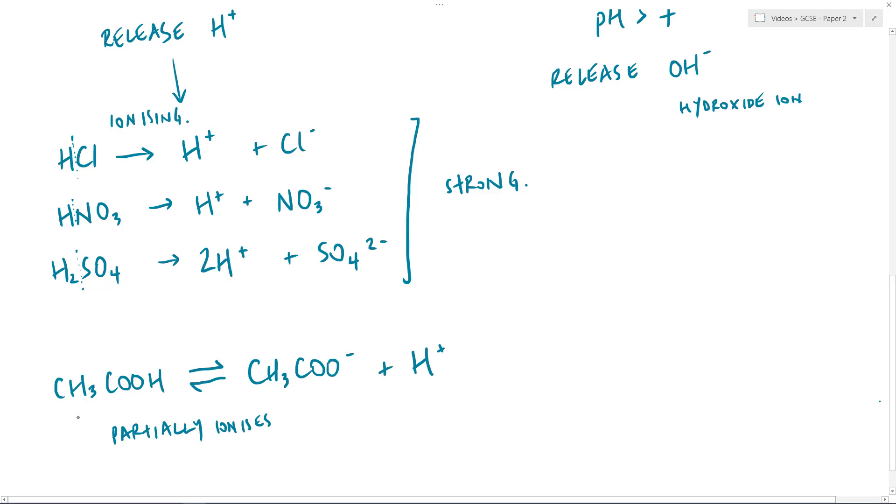To give you an idea, if there were about a thousand of these, only around about something like four I think it is would break up into the CH3COO- and the H+, so much less. And in that case, we call this weak.